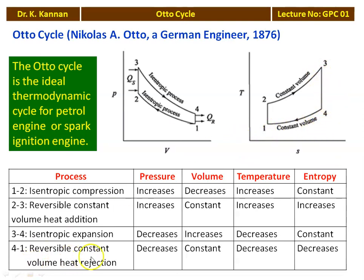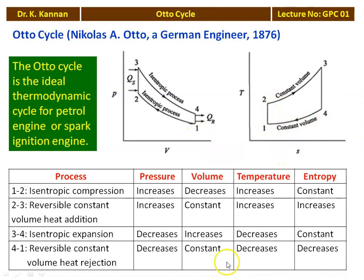For process 4 to 1, reversible constant volume heat rejection: pressure decreases from P4 to P1, volume remains constant (V4 = V1), temperature decreases, and entropy also decreases. For heat rejection, both temperature and entropy decrease. These are the four processes of the Otto cycle.